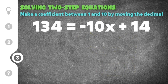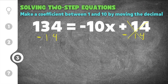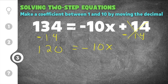Our final practice problem gives us 134 equals negative 10x plus 14. This time x is on the right side, but the rule stays the same — we still need x on one side by itself. That means the plus 14 has to go to the other side. To get rid of plus 14 we subtract 14 from both sides so it cancels. 134 minus 14 is 120, which equals negative 10x, and the equal sign and negative 10x come straight down.